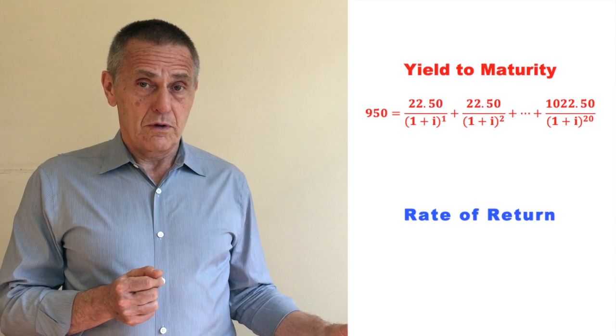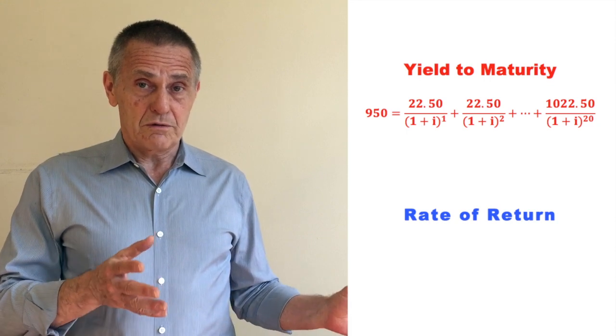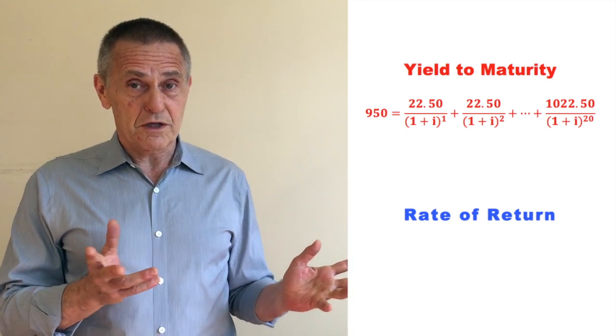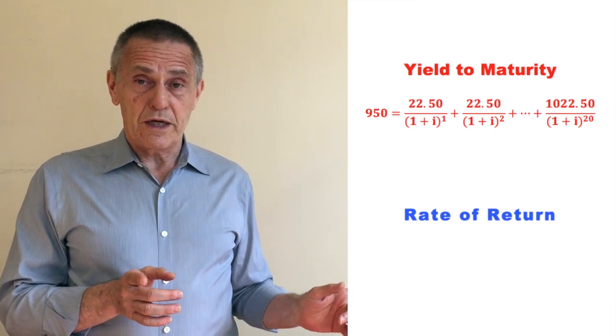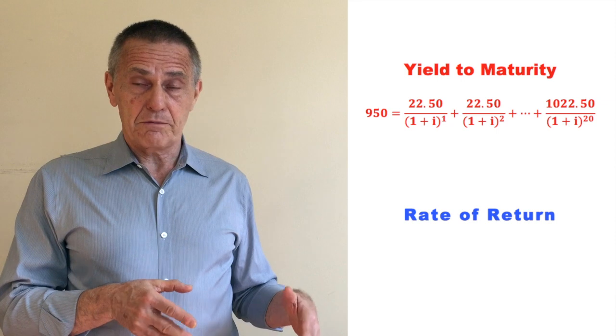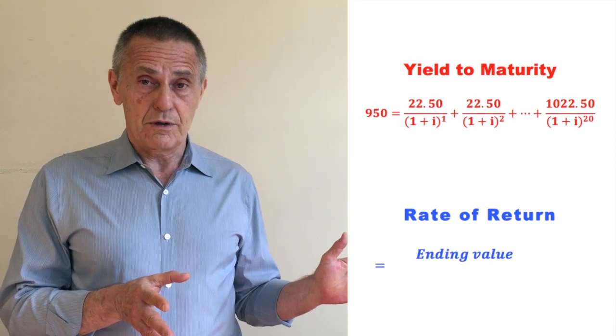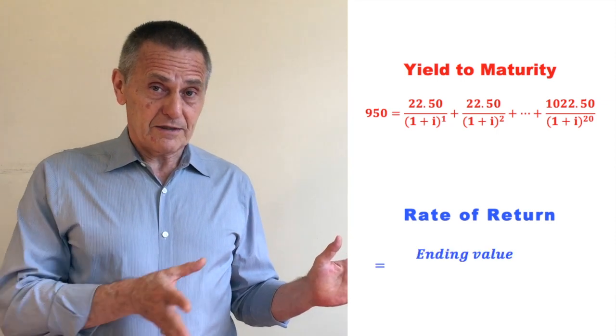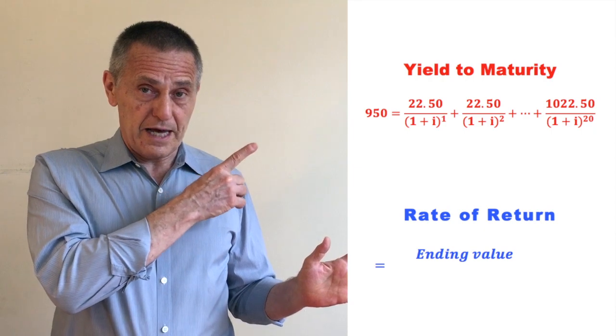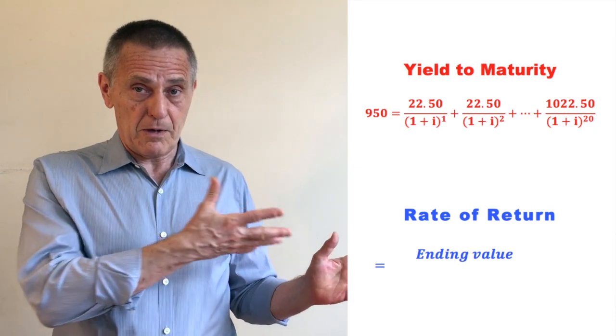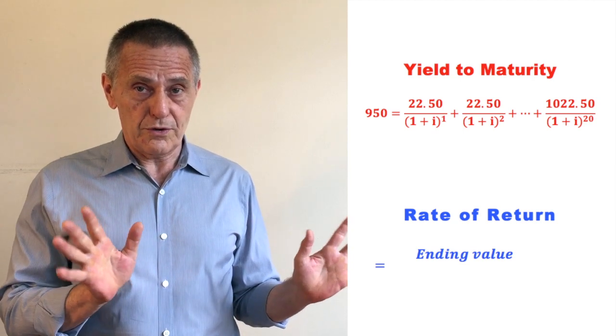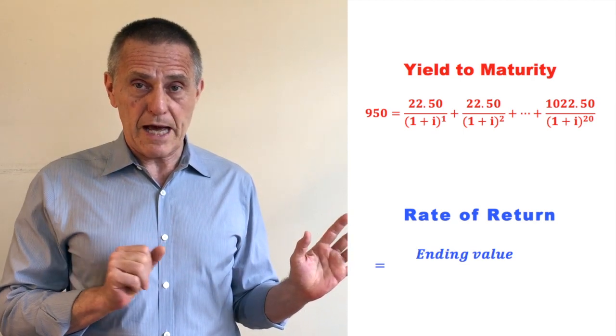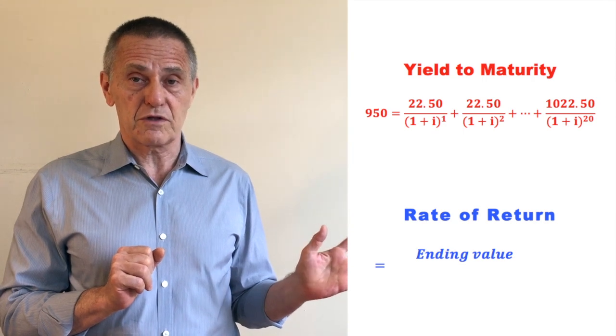What about rate of return? Well, rate of return today to a bond's maturity is a very problematic concept for a number of reasons. Because you'll note the rate of return formula is started out by taking an ending value. Ending value? That's all the cash flows over the life of the bond plus the reinvestment income on all the cash flows received prior to maturity. Well, unless one has a crystal ball, those rates of returns are impossible to forecast with any degree of certainty.